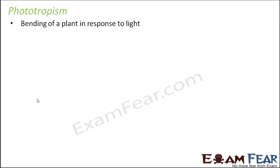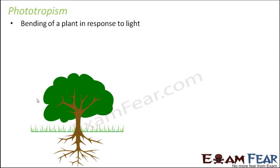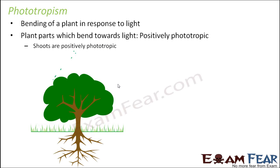Phototropism is the bending of a plant in response to light. When light falls evenly on the plant, all parts grow equally and the plant grows straight up. But when light comes slant ways, the plant tends to bend towards the light. Those plant parts which bend towards light are said to be positively phototropic — for example, shoots.